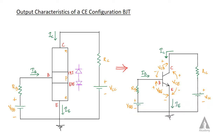This is our circuit diagram for the common emitter configuration. We have three voltages: VBE, the voltage between base and emitter; VCE, the voltage between collector and emitter; and VCB, the voltage between collector and base.